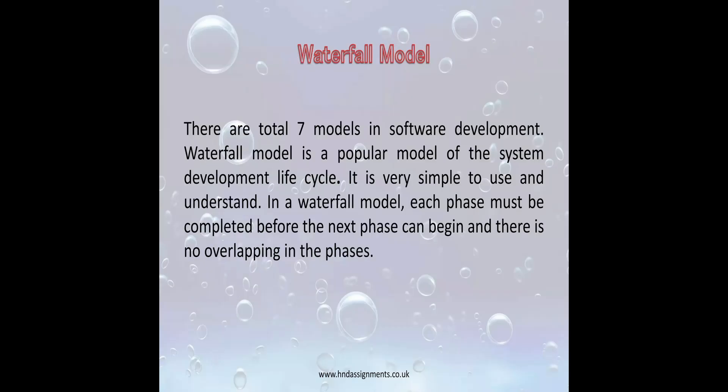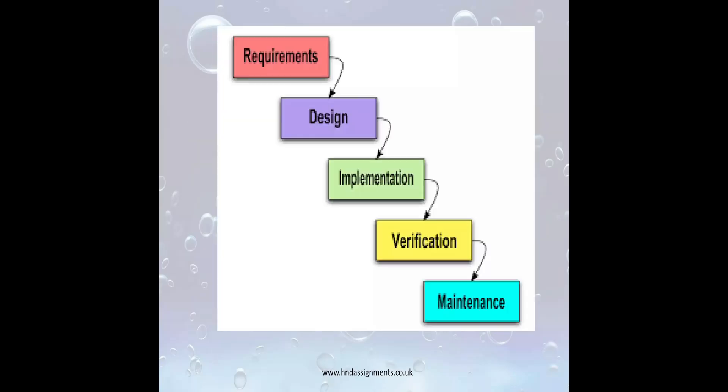What is the waterfall model? There are a total of seven models in software development. The waterfall model is a popular model of the system development life cycle and it is very simple to use and understand. The steps used in the waterfall model are: requirements, design, implementation, verification, and maintenance.